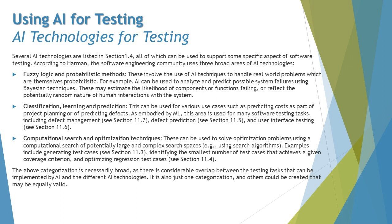When you talk about classification, learning and prediction, this can be used for various use cases such as predicting cost as part of project planning or predicting defects, as embodied by ML. The area is used for many software testing tasks including defect management, defect prediction and user interface testing. Classification, learning and prediction are the technologies used to determine cost prediction and various planning factors.